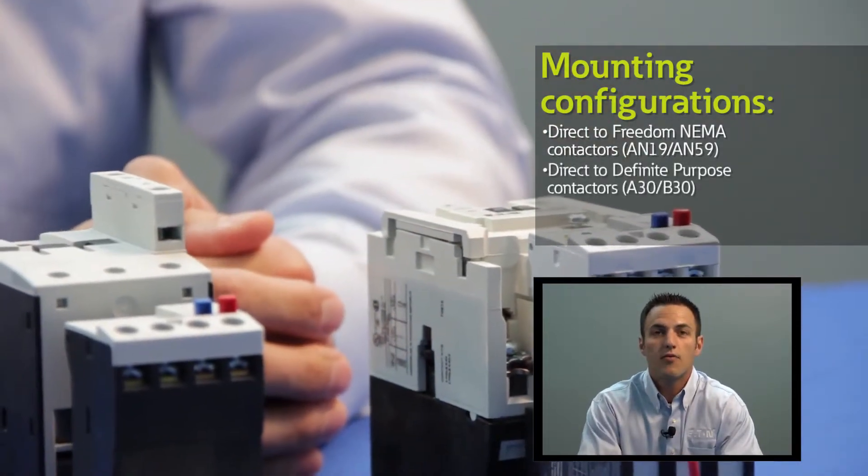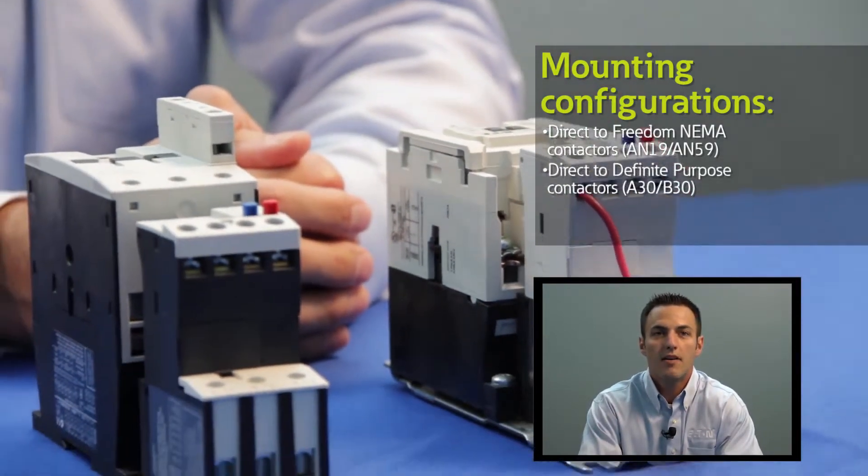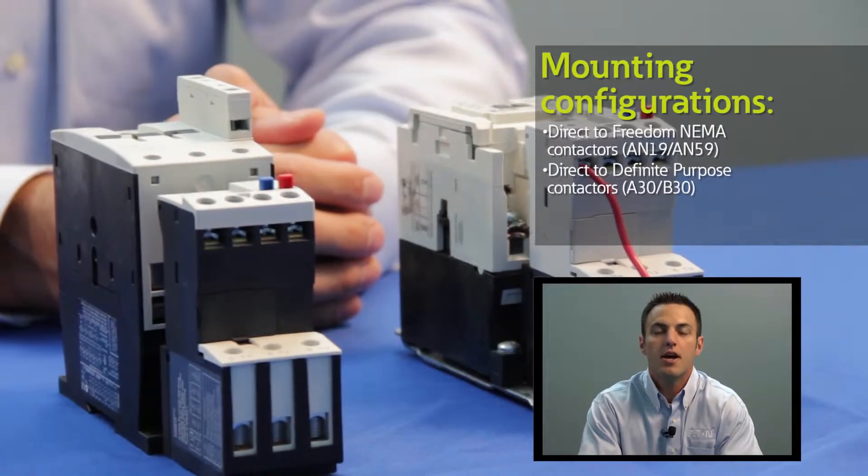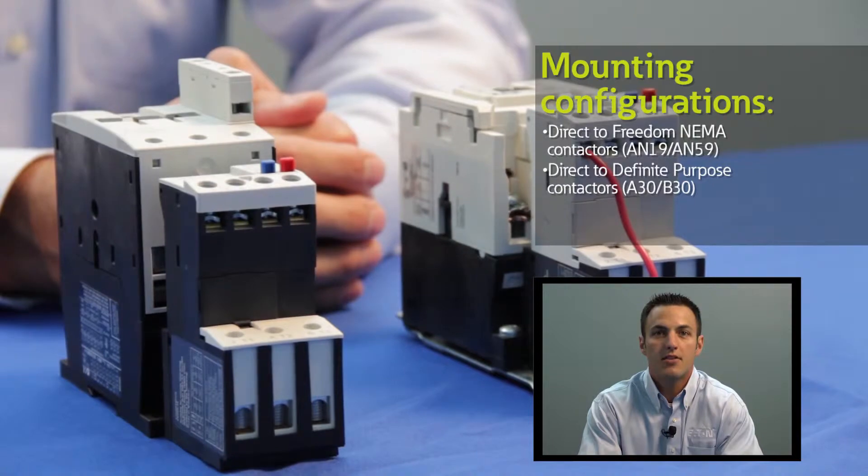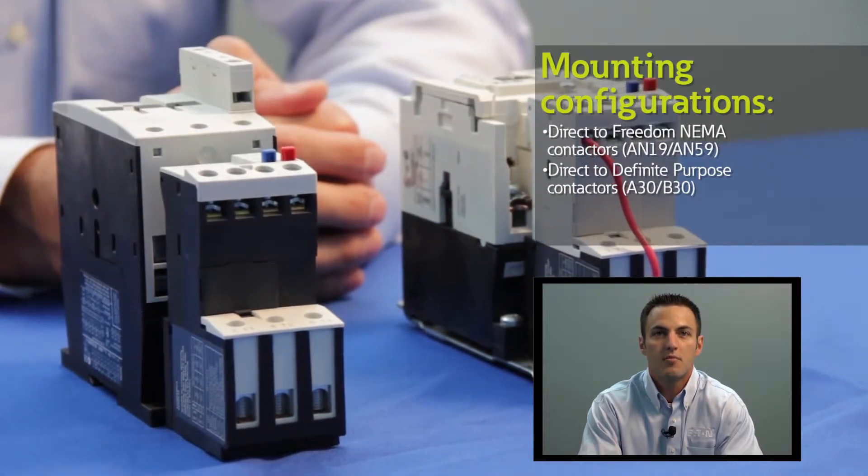We also direct mount the C440 overload to the C25 definite purpose contactor and we do that up to 100 amps. We designate that starter solution as the A30 and the B30 series of definite purpose starters.